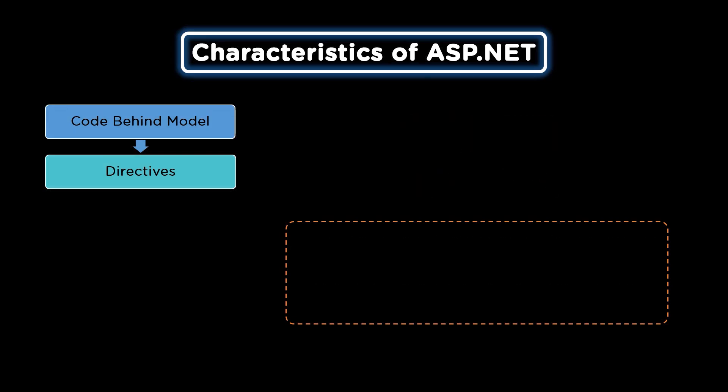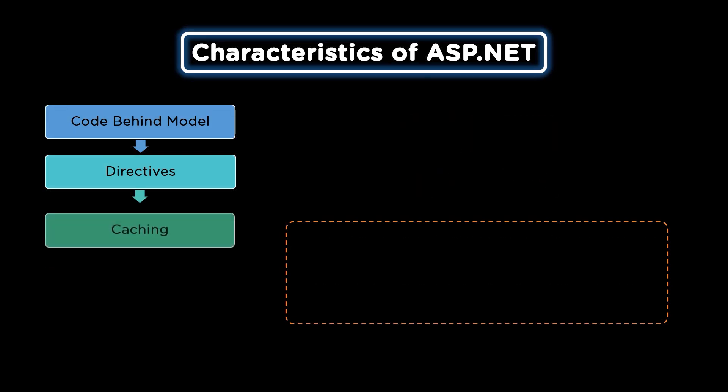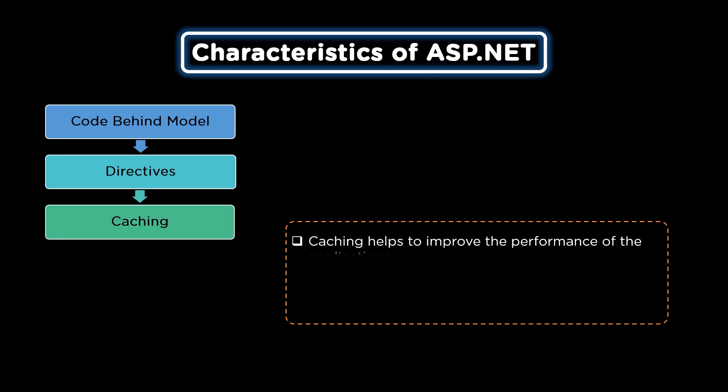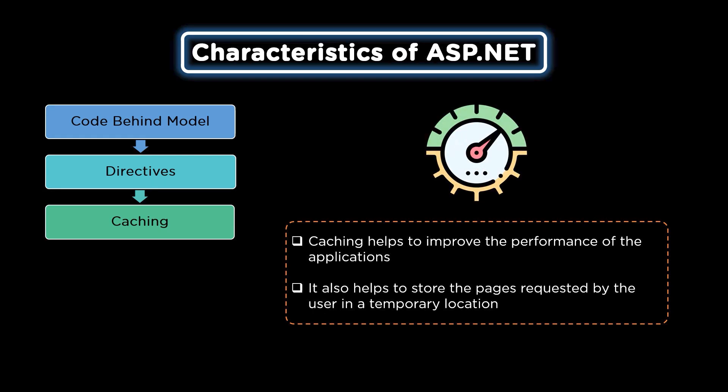The third characteristic is caching. Caching helps in improving the performance of an application, which helps a user to use an application more efficiently. It also helps to store page requests of the user in a temporary location.